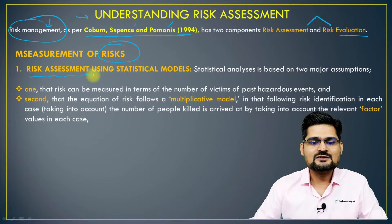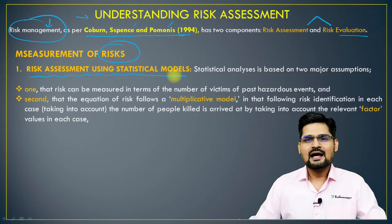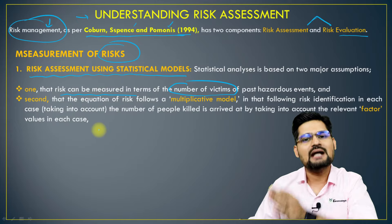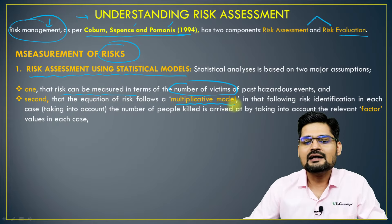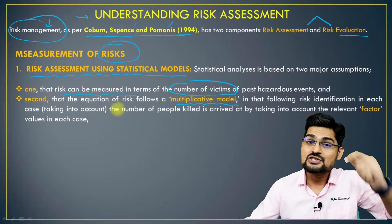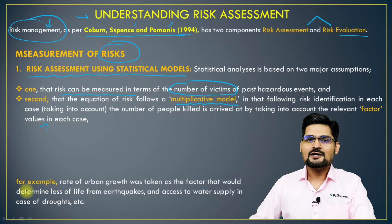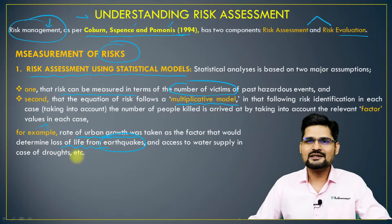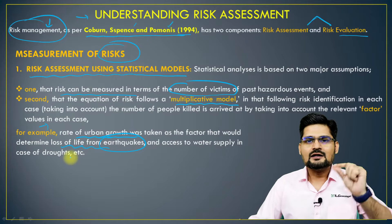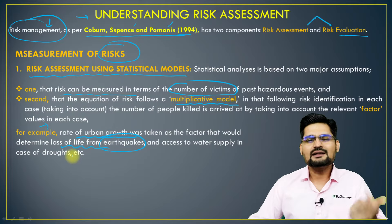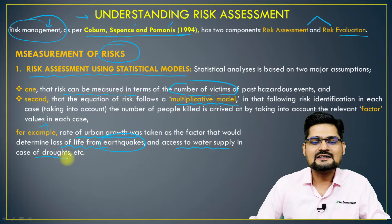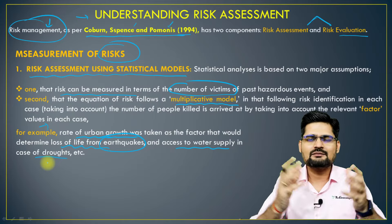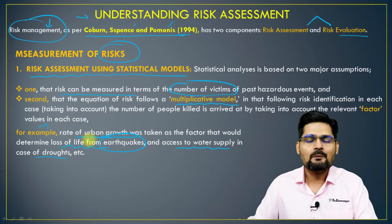The first approach is risk assessment using statistical models. There are two basic criteria: one, risk can be measured in terms of number of victims for past hazardous events and then future planning on that basis; and two, a multiplicative model, where numerous factors and contexts are incorporated — in which context, how many people were affected. For example, rate of urban growth could be taken as a factor for determining loss of life from earthquakes — as seen in the Syria-Turkey earthquake — or access to water supply in the case of droughts. Factor analysis, principal component analysis and many other statistical tools are used for this multiplicative method.